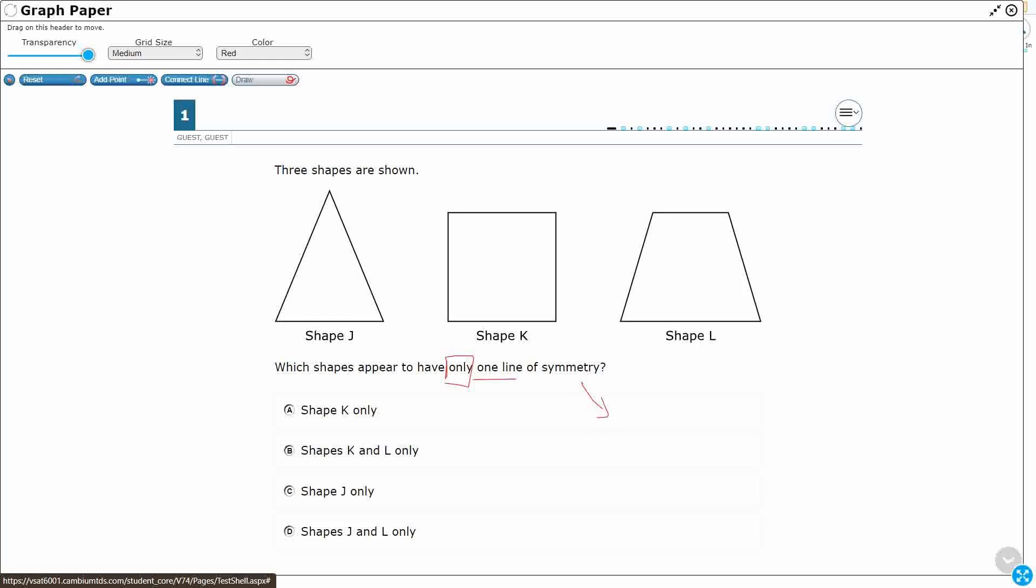A line of symmetry, well, first off, it's an imaginary line, and what it lets you do is it lets you fold a shape in half with no overlap. So that means that if you were to take a shape and fold it along that imaginary line, you would not see any part sticking out. That means it cuts it exactly in half. So let's look at these three shapes.